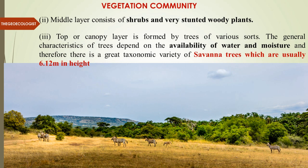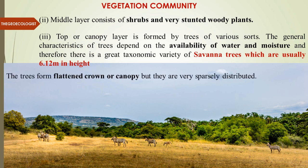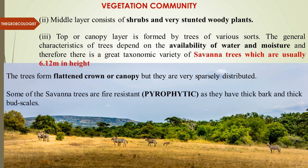The middle layer is the shrubs layer, with shrubs and very stunted woody plants. The third is the top canopy layer, dominated by trees, but very few in number. The trees depend on the availability of moisture and are not very tall — somewhere between 6 to 7 meters, precisely about 6.12 meters in height. The trees form a flattened crown or canopy and are very sparsely distributed. Some Savannah trees are fire resistant.